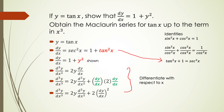Now we go to Example 2. If y equal to tan(x), show that dy over dx equal to 1 plus y². We obtain the Maclaurin series for tan(x) up to the term in x³. Given y equal to tan(x), we differentiate with respect to x to obtain the first derivative dy over dx equal to sec²(x).